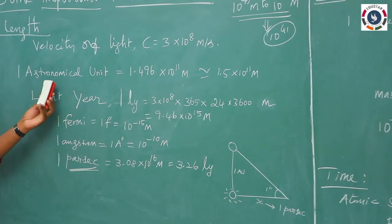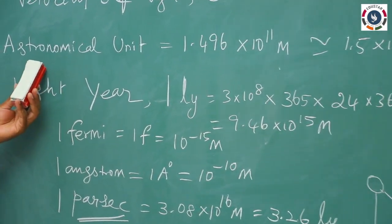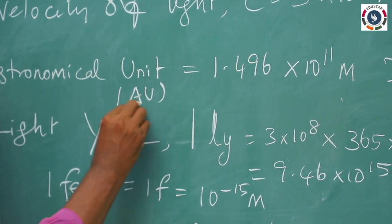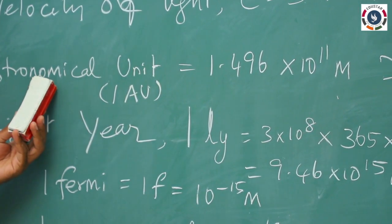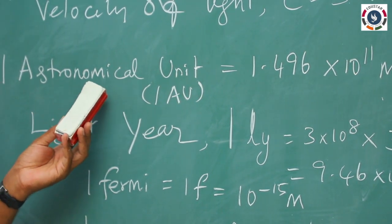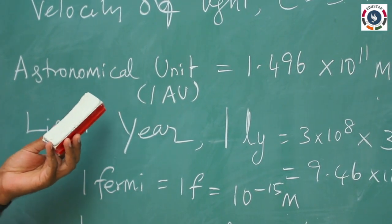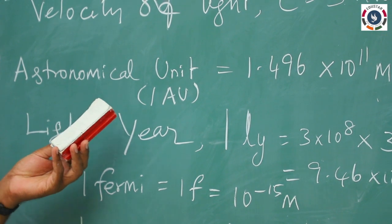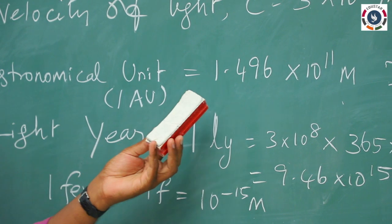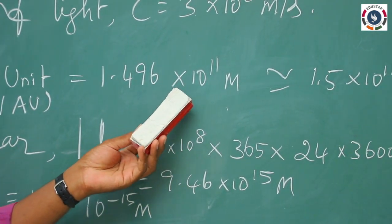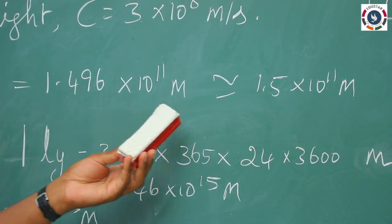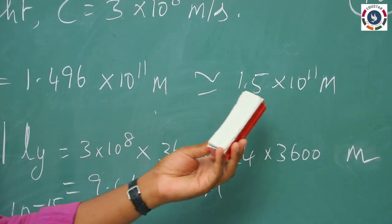Next, the astronomical unit. What do we mean by astronomical unit? We write it as 1 AU. It is the distance between the Earth and the Sun. In the solar family, Earth revolves around the star Sun. The distance between the Sun and Earth is called 1 astronomical unit, whose length is 1.496×10¹¹ meter, approximately 1.5×10¹¹ meter.